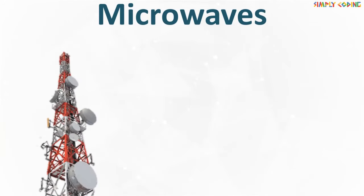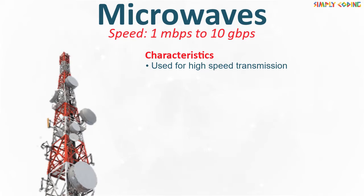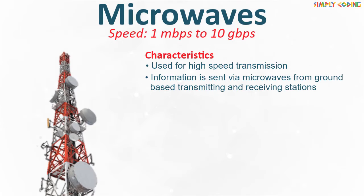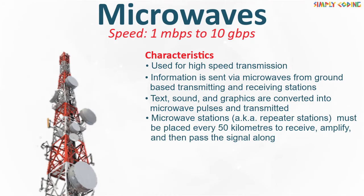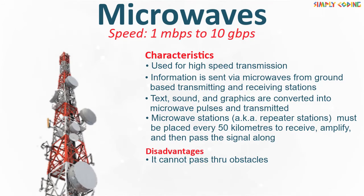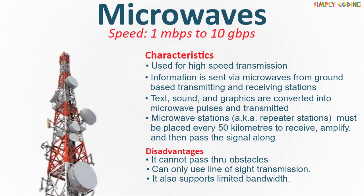First is microwave. The data transmission speed is between 1 Mbps to 10 Gbps. It is used for high speed transmissions. Information is sent via microwave from ground-based transmitting and receiving stations. Text, sound and graphics are converted into microwave pulses and transmitted. Microwave repeater stations must be placed every 50 km to receive, amplify, and pass the signal along. Its disadvantages are that it cannot pass through obstacles, can only use line-of-sight transmission, and supports very limited bandwidth. That is why stations are installed on tall towers and buildings.